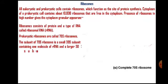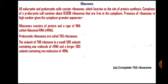The 70S ribosome is made up of two subunits. The smaller subunit is called 30S and the larger one is called 50S. The 30S subunit contains one molecule of rRNA, and the larger 50S subunit contains two molecules of rRNA. These 30S and 50S subunits combine with each other to form the 70S ribosome.